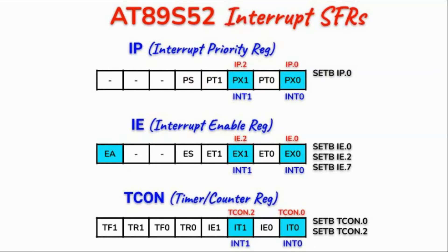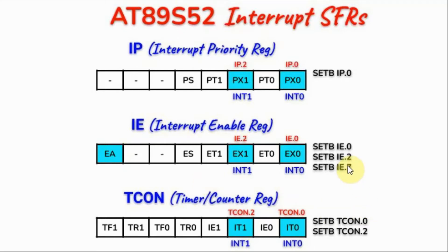Before we can use any interrupt, we need to enable it through the interrupt enable register. Setting the corresponding bit will enable interrupt 0, another bit enables interrupt 1, and further bits enable timer 0, timer 1, and the serial interrupt. The global interrupt enable bit enables all interrupts. As an example, if we want to use interrupt 0 and interrupt 1 in our program, these are the instructions we need to put in the code.